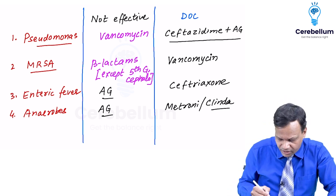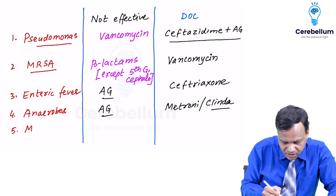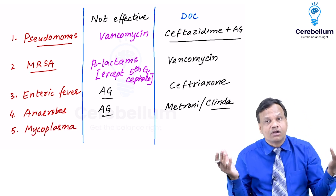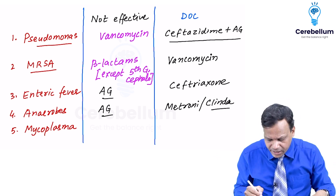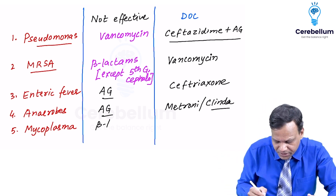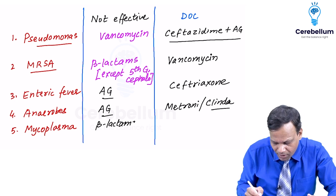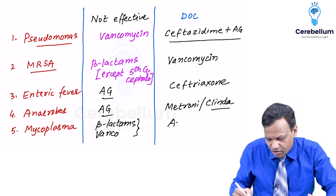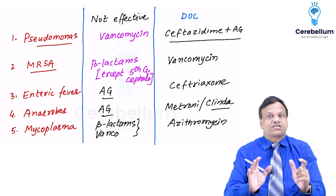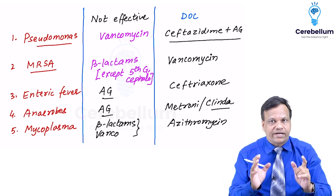The last topic is Mycoplasma. Mycoplasma does not contain a cell wall, so any drug that inhibits cell wall synthesis will not be effective — importantly, beta-lactams and vancomycin are not effective against Mycoplasma. The drug of choice for Mycoplasma is azithromycin. This slide you must remember — you cannot forget it.